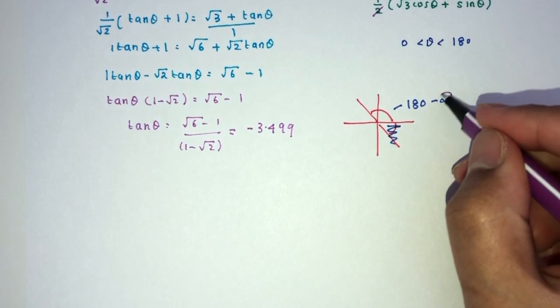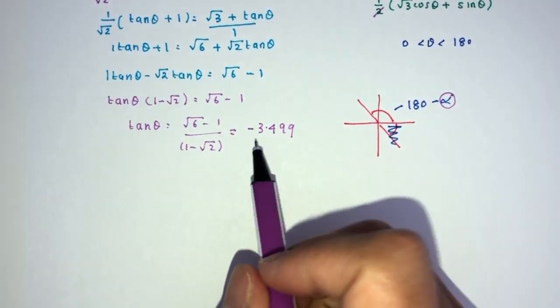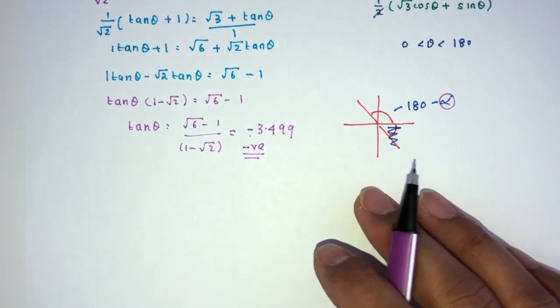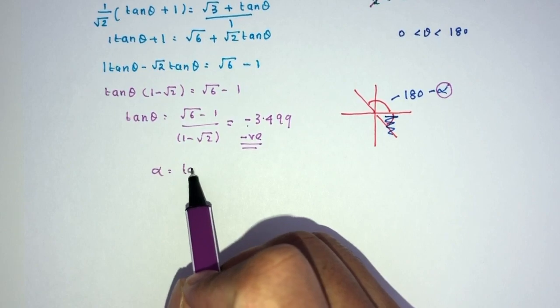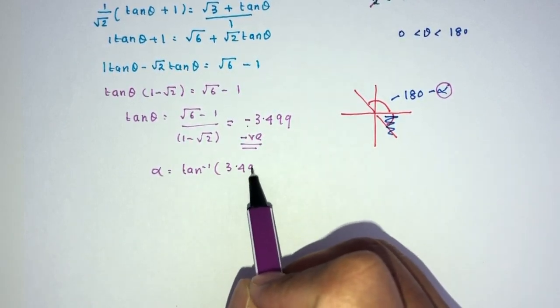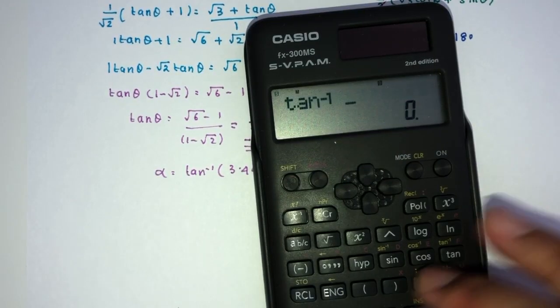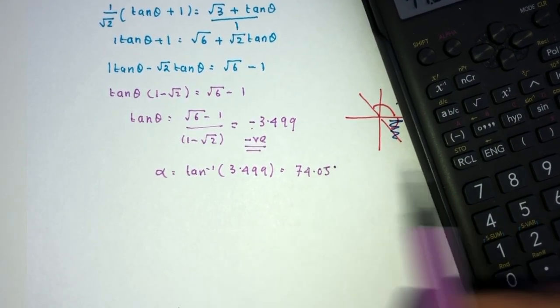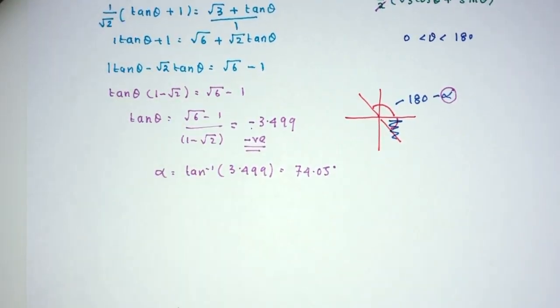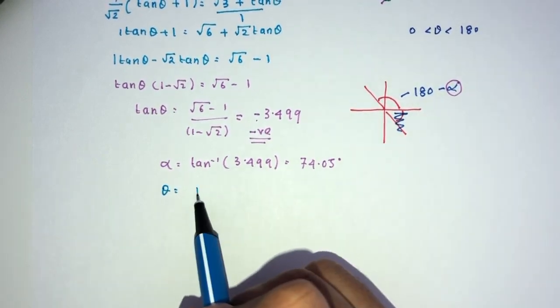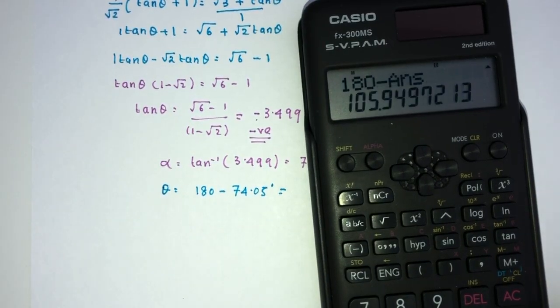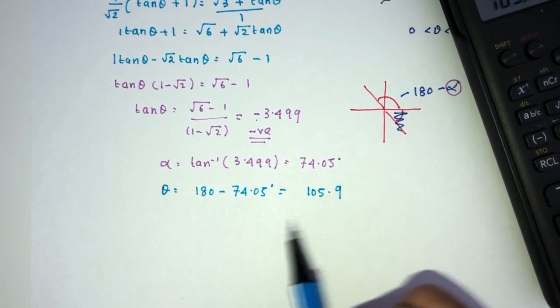The reason why I'm using α here is because I can't find the value of θ directly because it is negative. Whenever it's negative, I try to use some angle to help me find the value of α. So first, let's find this one. It is tan inverse of the positive value of this one. Let's see what you will get. So tan inverse of 3.499, that should be 74.05. So finally, we have to find the value of θ according to the quadrants, which is 180 - 74.05. That should be 105.9. And this is your answer for question number 3.